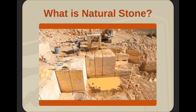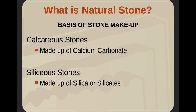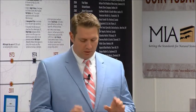Here we have a quarry in New Mexico — a travertine quarry — a pretty typical quarry. As we look at a quarry and figure out what kind of stone it is, we have to understand it's basically made up in two different ways. Any stone can be classified as either calcareous or siliceous. If it's calcareous, it's made up of calcium carbonate, similar to marine animal shells and eggshells. Siliceous stones are made up of silica or silicates — effectively sand or quartz. This is a very important distinction to understand right at the outset.